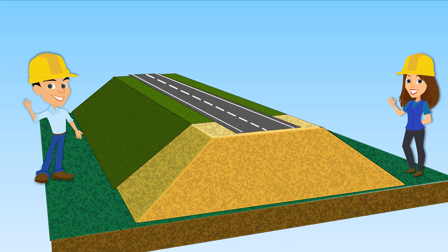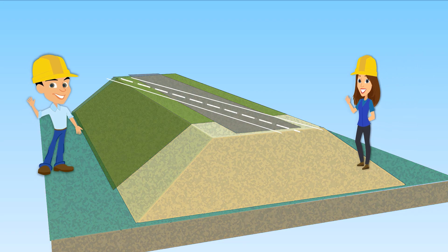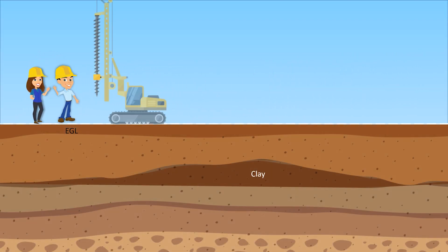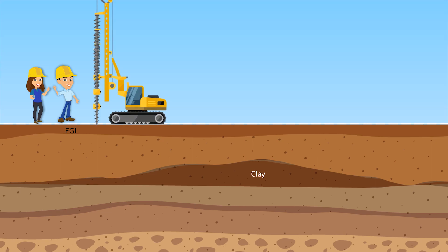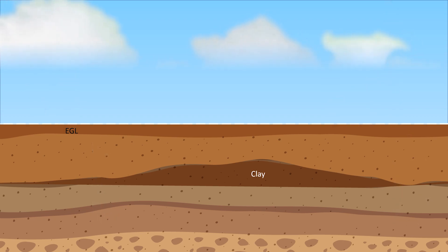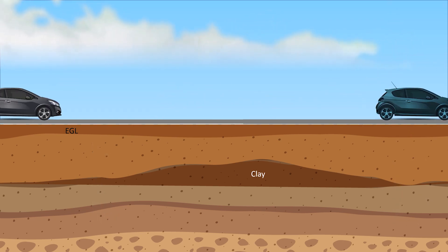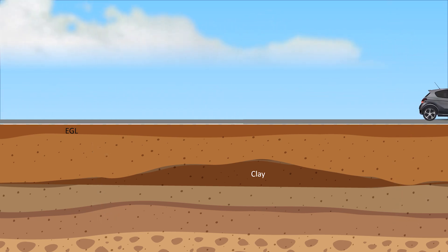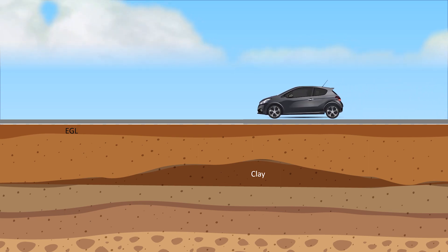Let's construct a roadway on an embankment. The primary task will be to investigate the underlying soil. How are you going to do that? I'm going to go to the site and do some boreholes. With that, I'm going to get the soil profile. Based on the soil investigation, I will build the road for traffic.